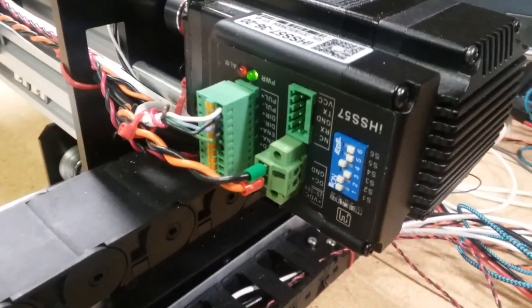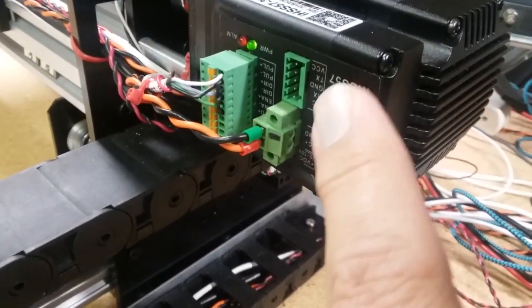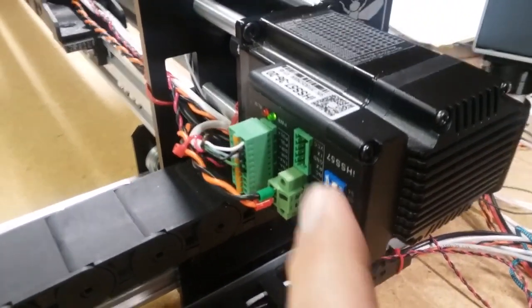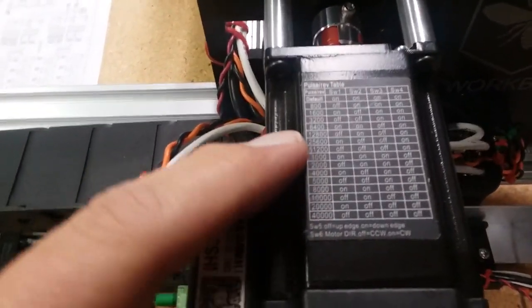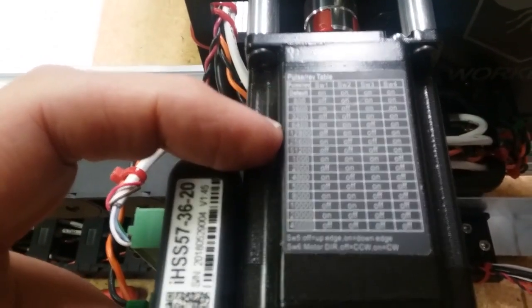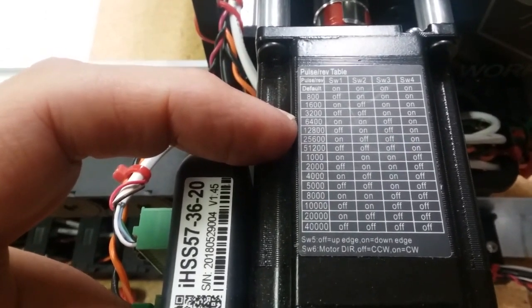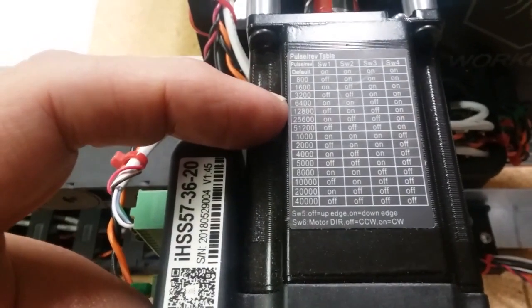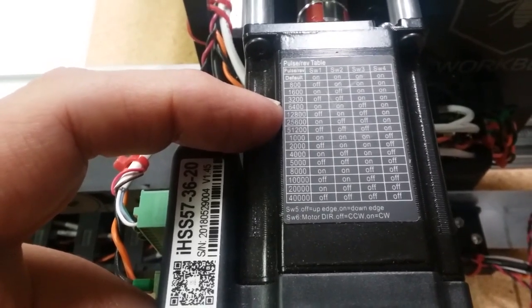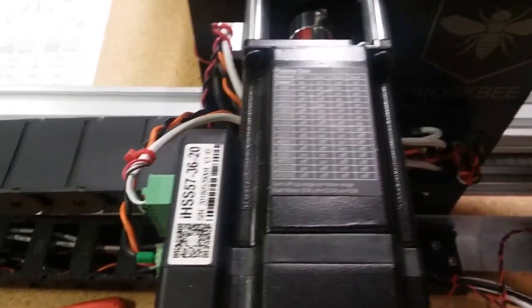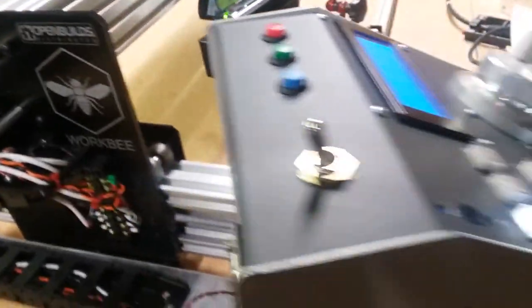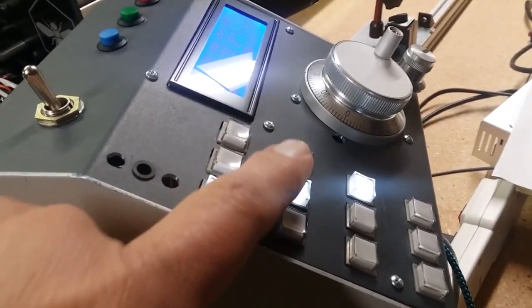Over on my stepper motor I've went ahead and switched my micro stepping switches here. If I know this switch setting, I can read up here that on my pulse per revolution table I'm way down here on 6400 pulses per revolution, which is 32nd steps, 32nd stepping I guess I should say.